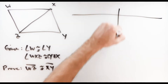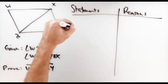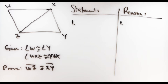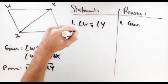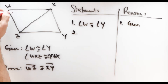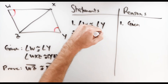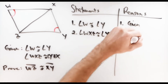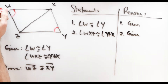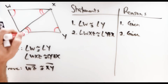Setting up our two-column proof with statements and reasons, we start with the given information. Angle W is congruent to angle Y — we'll mark that into the picture. And second, angle WXZ is congruent to angle YZX — also given, which we'll mark as well. Angle WXZ is this angle up here, and angle YZX is this angle down here. Working backwards, if we want to prove WZ and XY are congruent — these two left and right sides — we want to first know that the triangles are congruent.